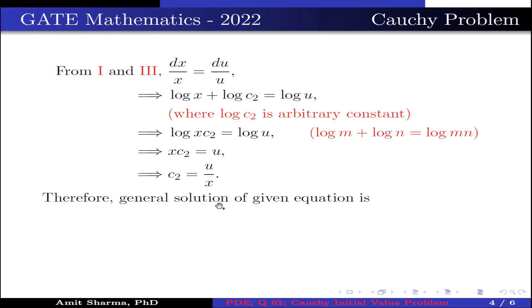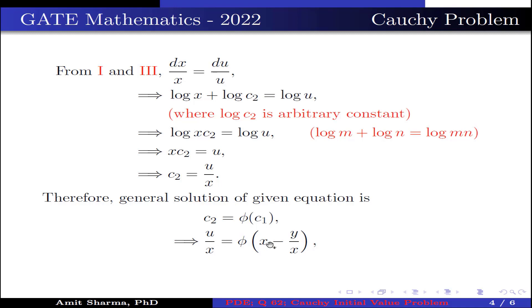Therefore, the general solution of the given equation is c₂ = φ(c₁), which is written as u/x = φ(x − y/x). This implies the value of u = x·φ(x² − y)/x.